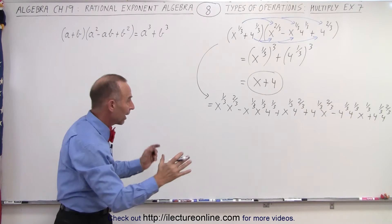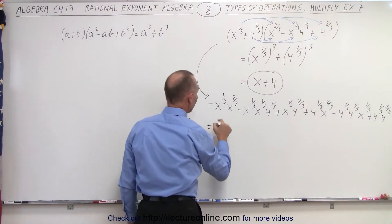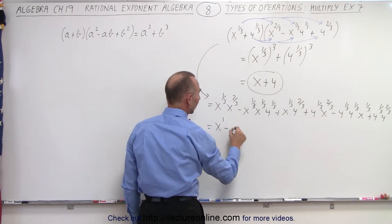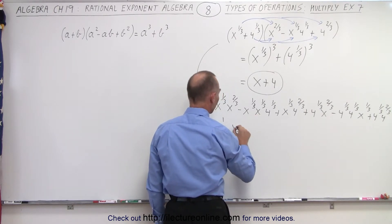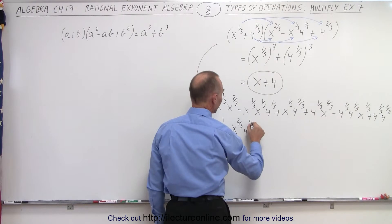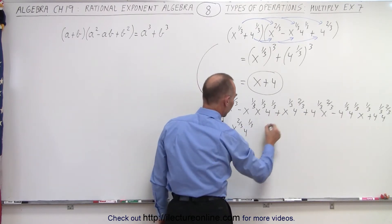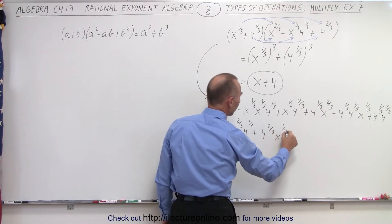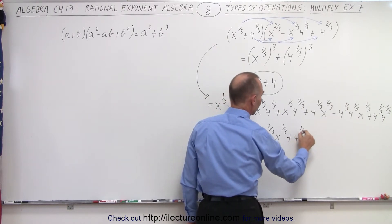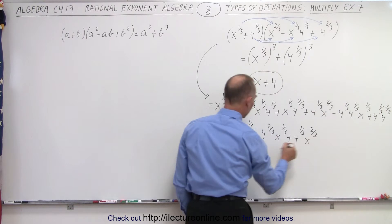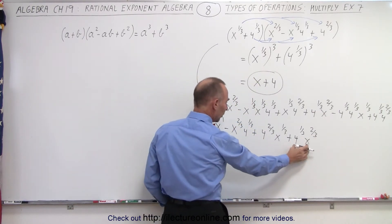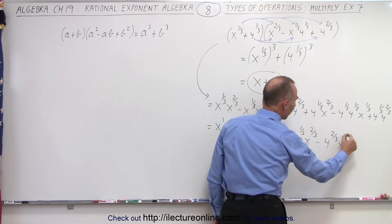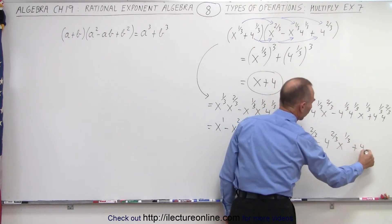Now let's combine the terms. We have x to the one-third times x to the two-thirds — adding exponents gives three-thirds, or x to the first power. Minus x to the two-thirds times 4 to the one-third. Plus 4 to the two-thirds times x to the one-third. Plus 4 to the one-third times x to the two-thirds. Notice that last term is the same as the earlier one but with opposite signs. Then minus 4 to the two-thirds times x to the one-third, and finally plus 4 to the first power.